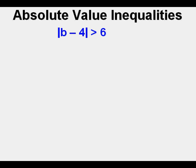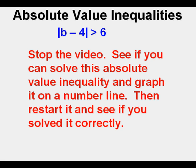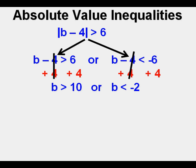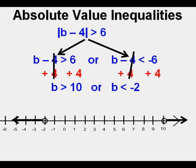Here's another problem to solve and graph. The absolute value of quantity b minus 4 is greater than 6. Stop the video — see if you can solve this absolute value inequality and graph it on a number line. Then restart to see if you got it right. Since more is OR, we divide it into two parts: b minus 4 is greater than 6, or b minus 4 is less than negative 6. We add 4 to each side of each inequality: b is greater than 10, or b is less than negative 2. Here is the absolute value inequality graphed on a number line — greater than 10 and less than negative 2.